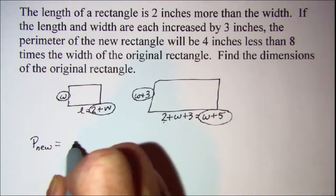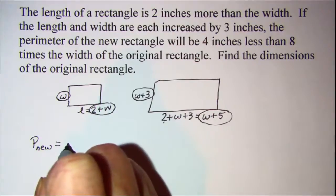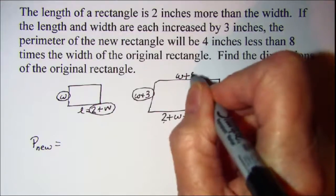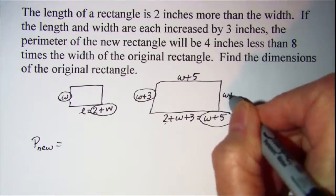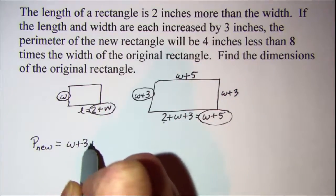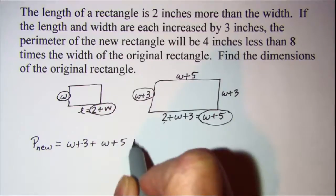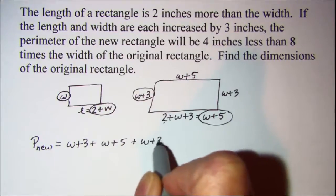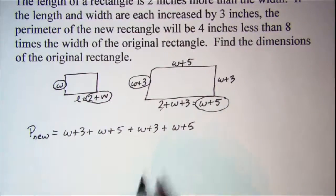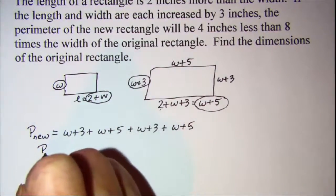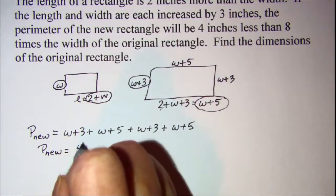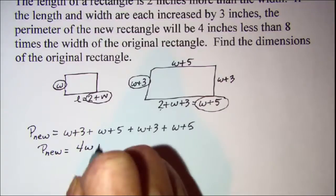Or you can use the formula, but I'll just go ahead and write: this side is going to be W plus 5 and this side will be W plus 3. So I have W plus 3 plus W plus 5 plus W plus 3 plus W plus 5. So my perimeter of my new rectangle is 4W plus 16.